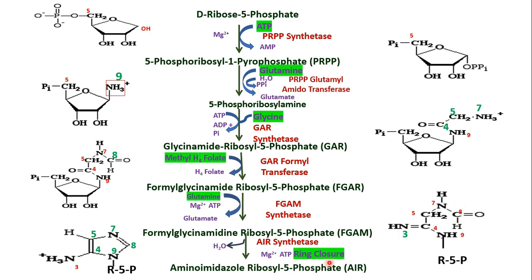At this point the ring is almost complete. With a ring closure and a synthetase enzyme, the ring is closed with the elimination of water, forming the imidazole ring with an amino group. This is amino imidazole ribosyl 5-phosphate, abbreviated as AIR. The enzyme is AIR synthetase.